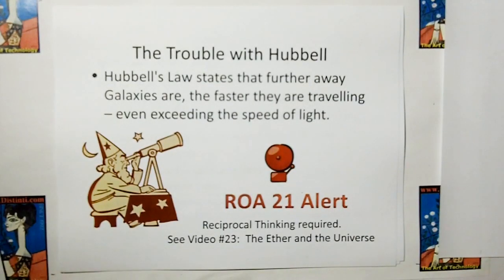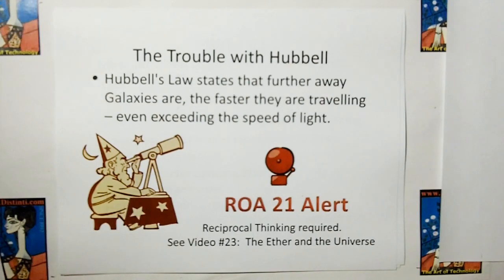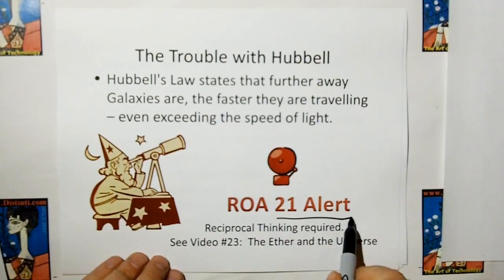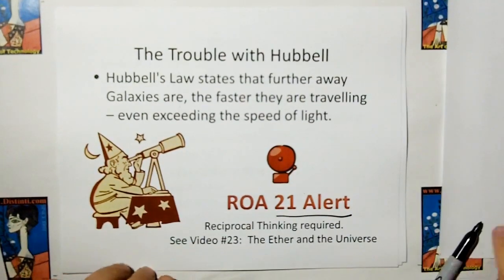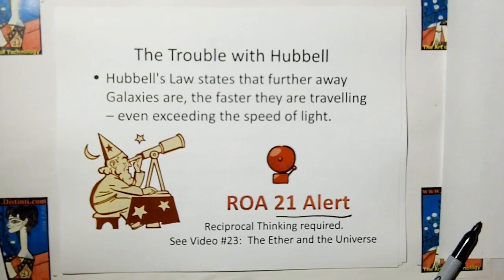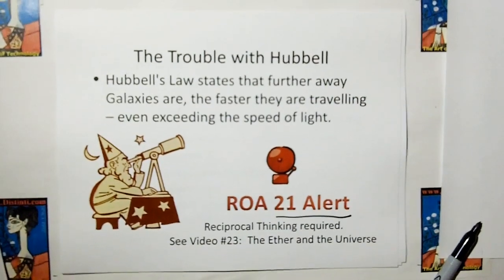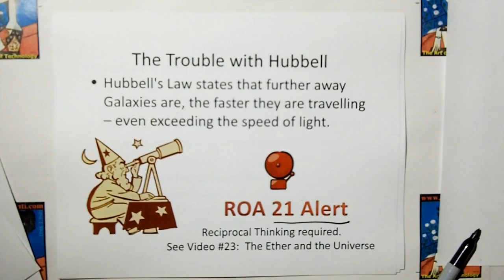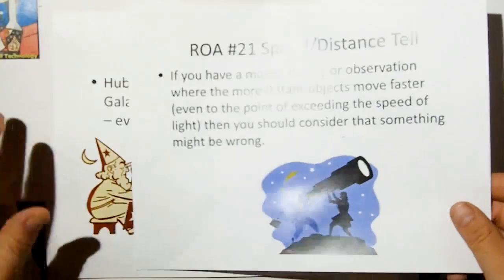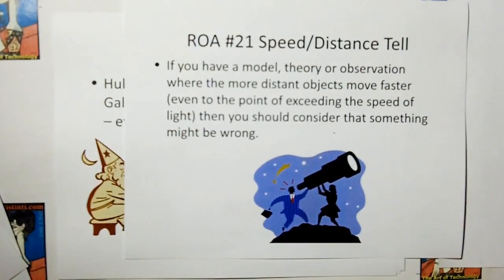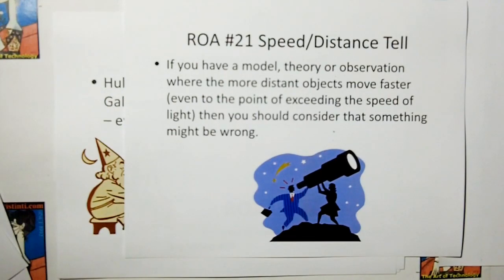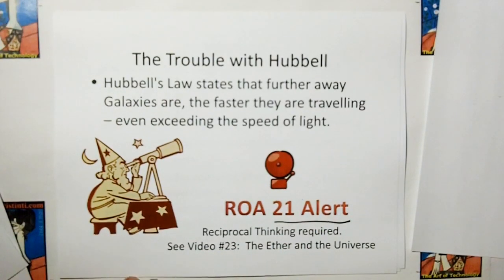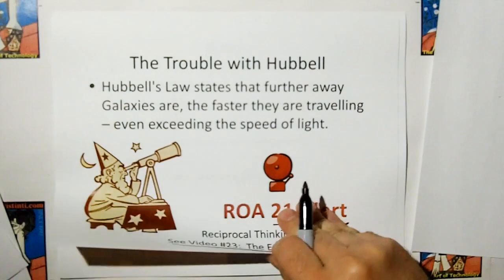The trouble with Hubble. Hubble's law states that the further away galaxies are, the faster they are traveling, even exceeding the speed of light. Whoa! Rule of acquisition 21 alert! Remember rule of acquisition number 21? Where the speed-distance tell. If you have a model of theory or observation where the more distant objects move faster, even to the point of exceeding the speed of light, then you should consider that something might be wrong. We're going to get into this in video 23.